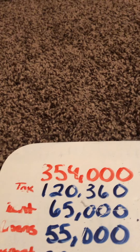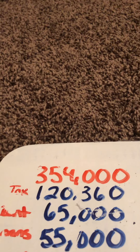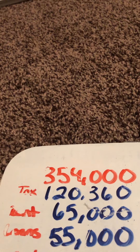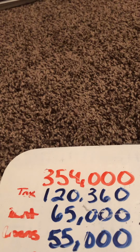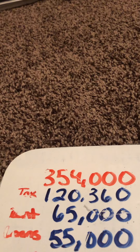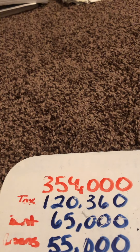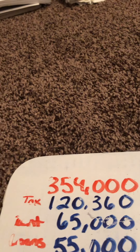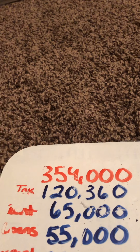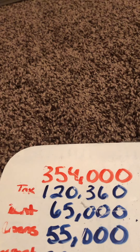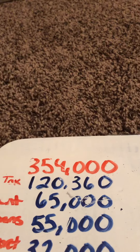Then they have any debt they have to pay back. This could be student loans, a brand new car, a mortgage payment for a small condo — any type of debt that you may incur. That could be about $55,000.